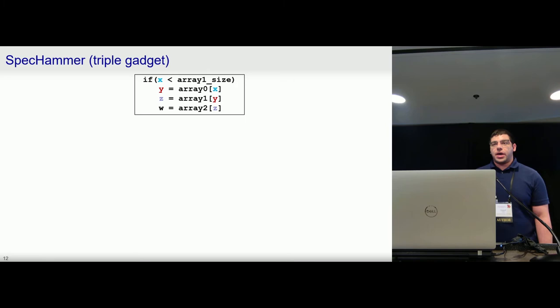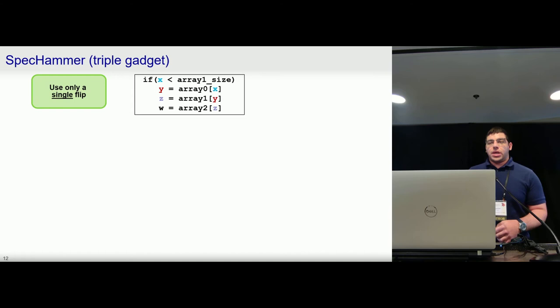So to get around this issue, we devised the triple gadget, which has similar behavior to what we saw before, except now we have a triple nested array access consisting of three arrays rather than two. And just like before, it's in a conditional statement where we have no direct control over X.